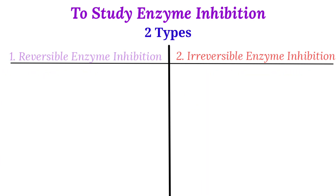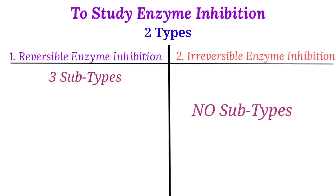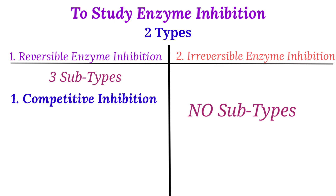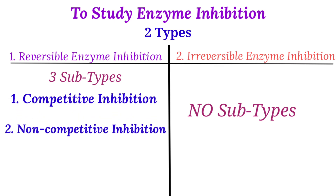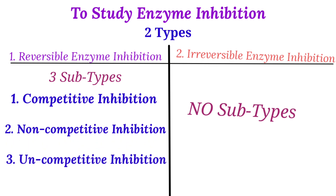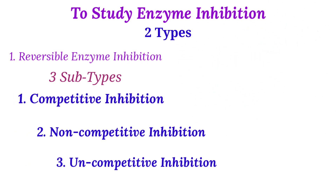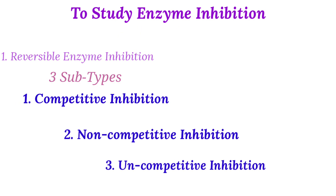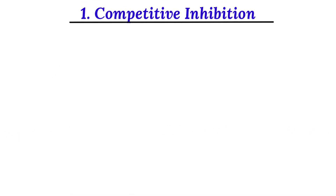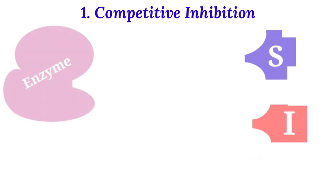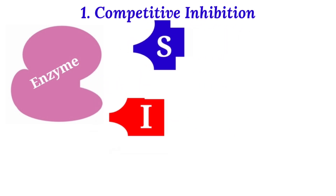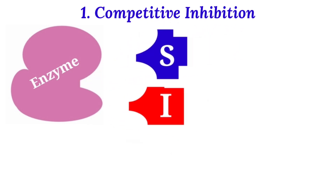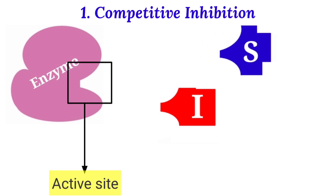In reversible inhibition we have three different subtypes: the first is competitive inhibition, the second is non-competitive inhibition, and the third is uncompetitive inhibition, which are the main focus of today's discussion. Let's discuss them separately.